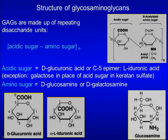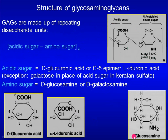Glycosaminoglycans are made up of repeating disaccharide units. Each unit consists of an acidic sugar and an amino sugar. Acidic sugar can be either D-glucuronic acid or its C5-epimer, L-iduronic acid. Amino sugar can be either D-glucosamine or D-galactosamine.